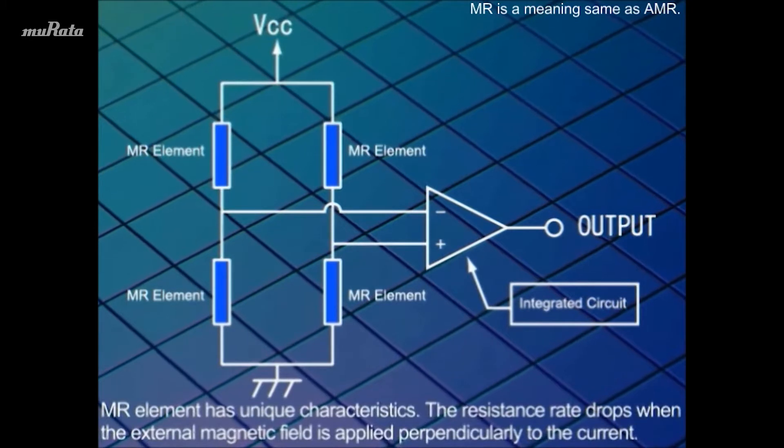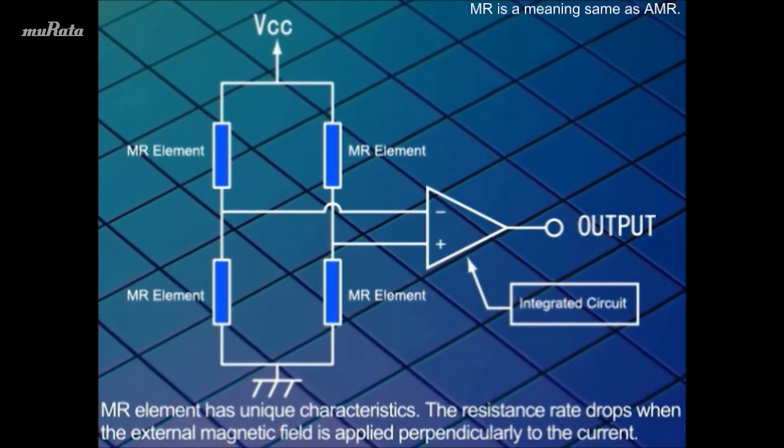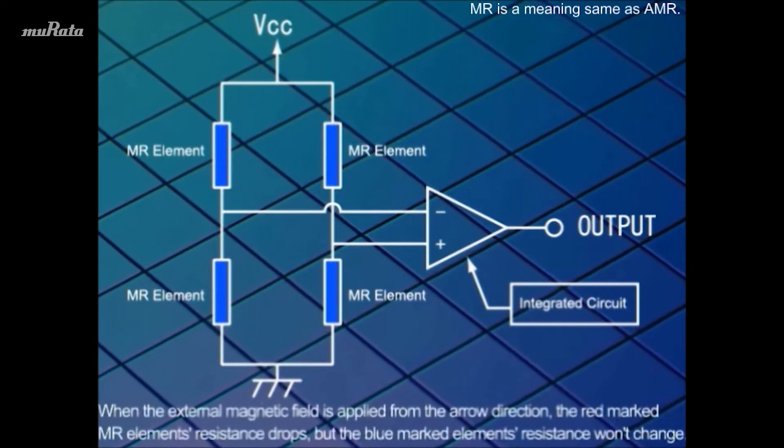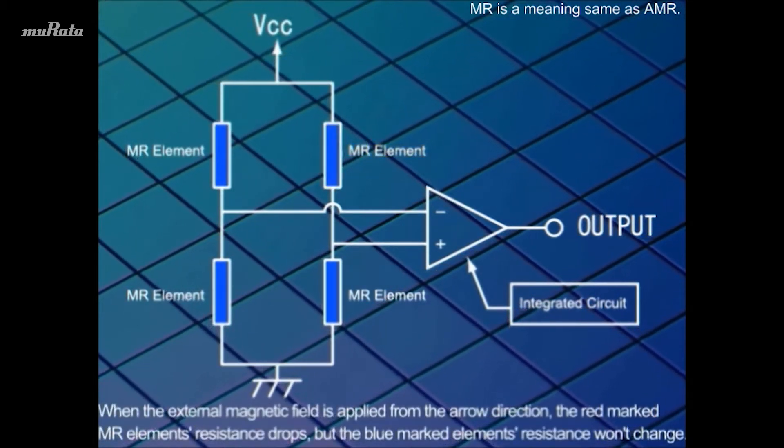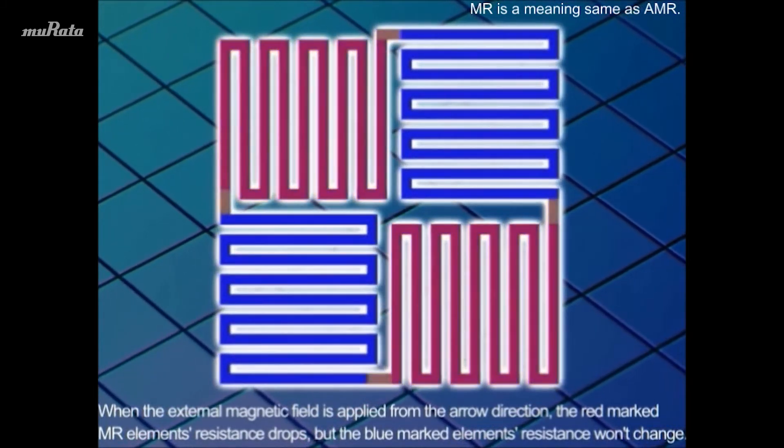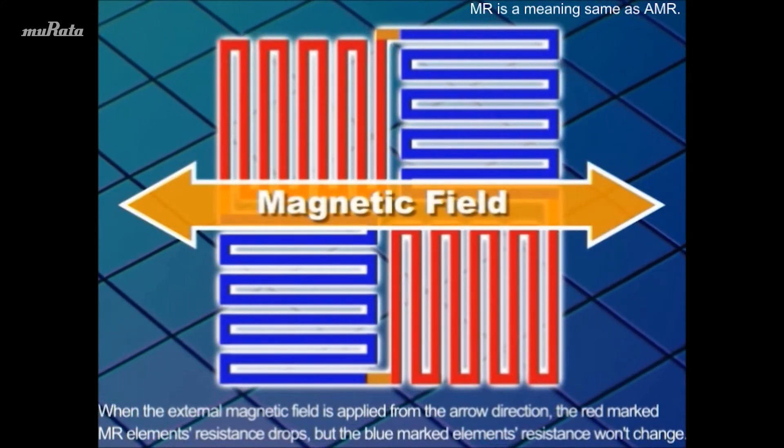MR element has unique characteristics. The resistance rate drops when the external magnetic field is applied perpendicularly to the current. When the external magnetic field is applied from the arrow direction, the red marked MR element's resistance drops, but the blue marked element's resistance won't change.